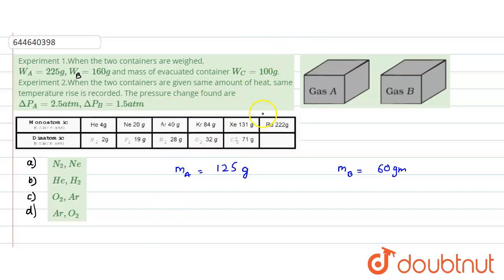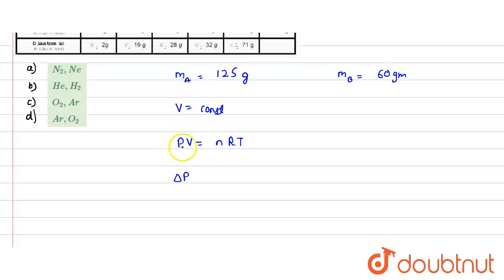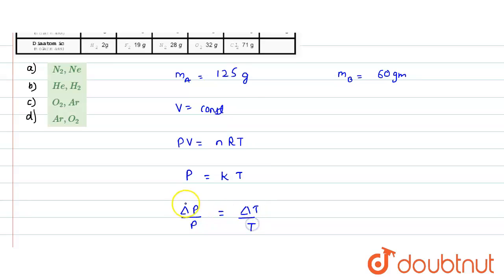Since the volume of the container is constant and the same temperature rise is recorded, we use the ideal gas equation PV = nRT. Since V is constant, P is directly proportional to T. We can write P = kT, and taking changes: ΔP/P = ΔT/T.